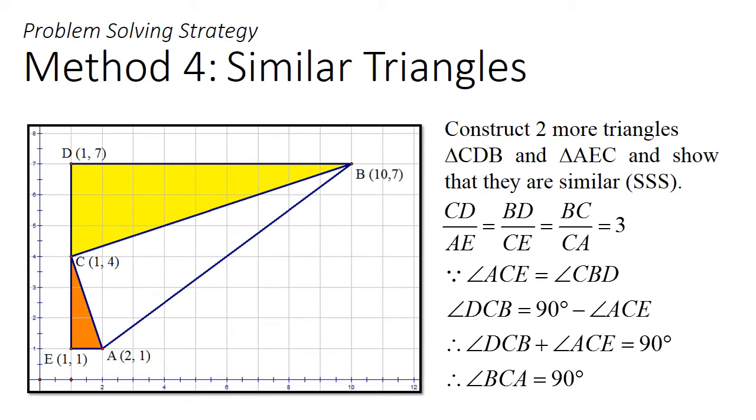In method 4, we can construct two more right angled triangles, CDB and AEC, and prove that these two triangles highlighted in yellow and orange are similar. Since angle BCD and DCB add up to 90 degrees, by similarity, angles ACE and DCB will also add up to 90 degrees.